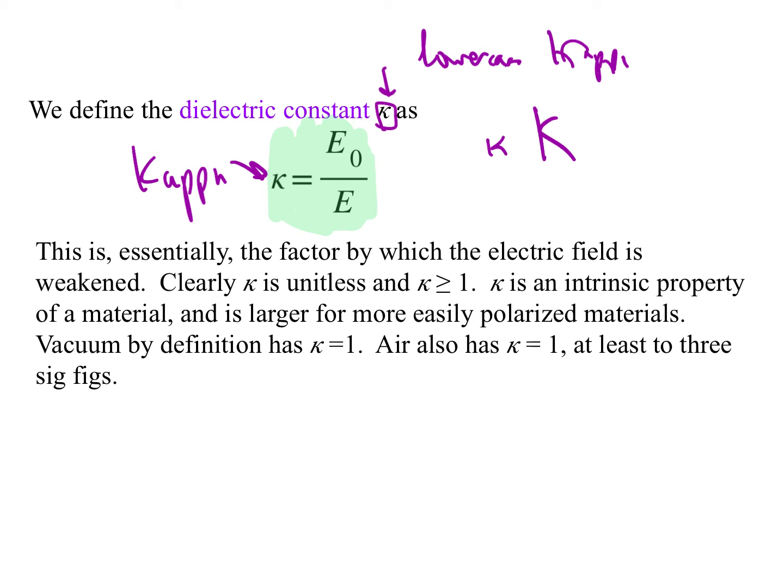This is essentially the factor by which the electric field is weakened. In other words, if kappa is two, you've weakened the field by a half. If kappa is three, now it's down to a third, and so on. We can see that kappa is unitless. It's electric field over electric field, so there's no dimensions. And it's always greater than or equal to one. It's an intrinsic property of the material. And it is larger for more easily polarized materials. The easier it is to get these things to shift around, the larger kappa is.